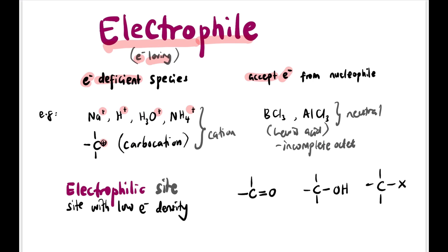In organic compounds, there is an electrophilic site — a site that is electron-deficient with low electron density. This is usually found in species containing C=O. Because O is more electronegative than C, the carbon in C=O, C–OH, and C–X is called an electrophilic site because it is partially positive.